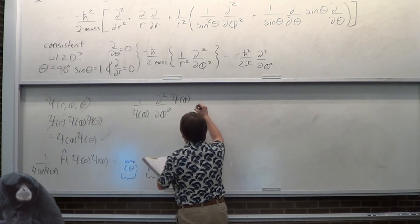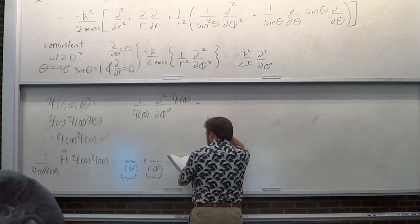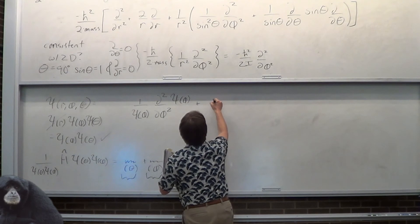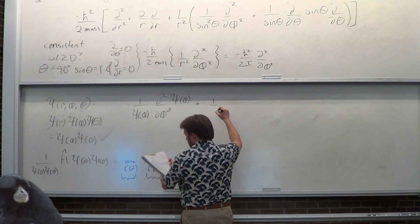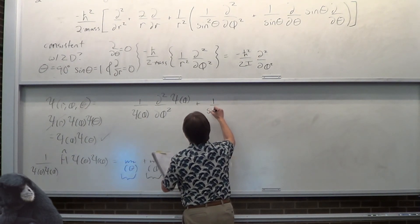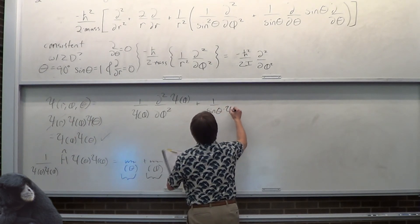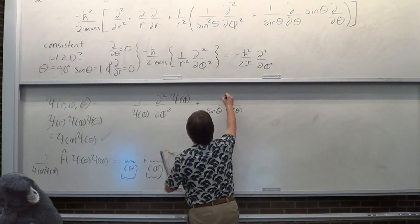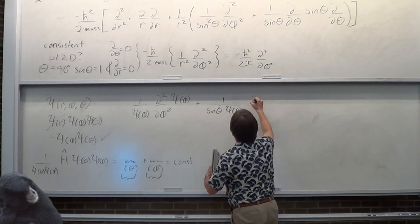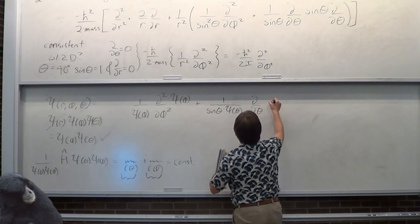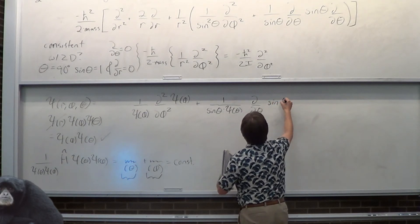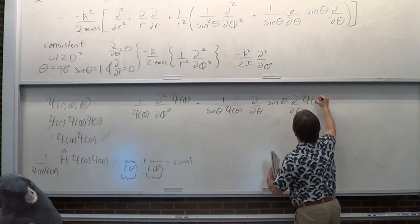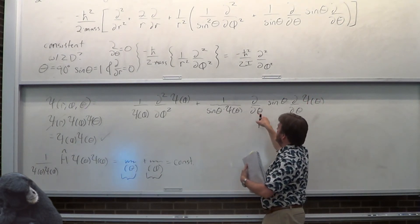I've got one over sine theta times the wave function with theta — so theta is in there. The d/dR terms are gone because those wipe out. The theta part can't pass through the phi derivatives, but the theta wave function can.